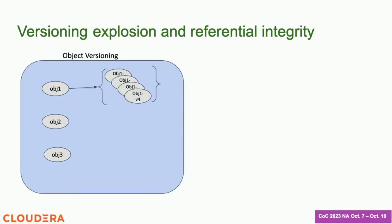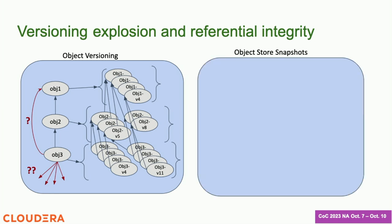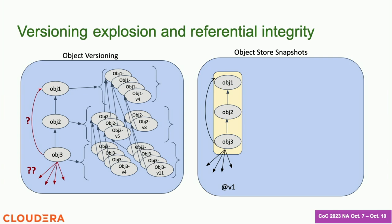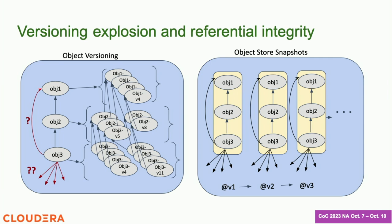You have object one with different versions, object two with a bunch of versions. Any time the application creates a dependency you have a reference explosion — different versions pointing to another set of objects' different versions. It's very hard for an application to determine which versions correspond to which versions of another object and which ones make sense from an application consistency perspective. As opposed to that, with the snapshot feature developed for Ozone, the application can define dependencies between different objects, and once defined, all of them together with their references will atomically move from one version to another.